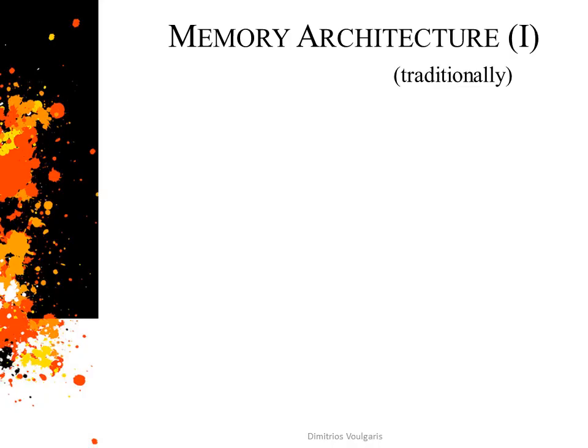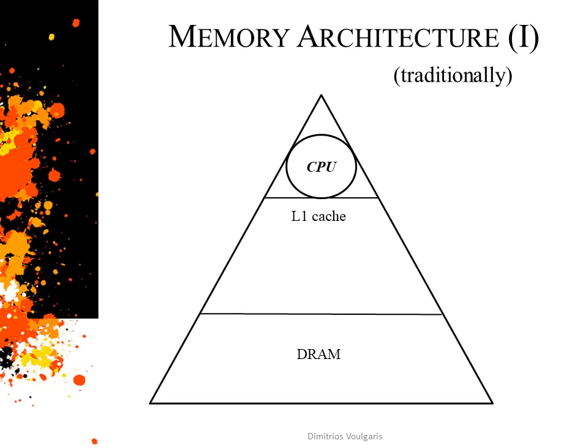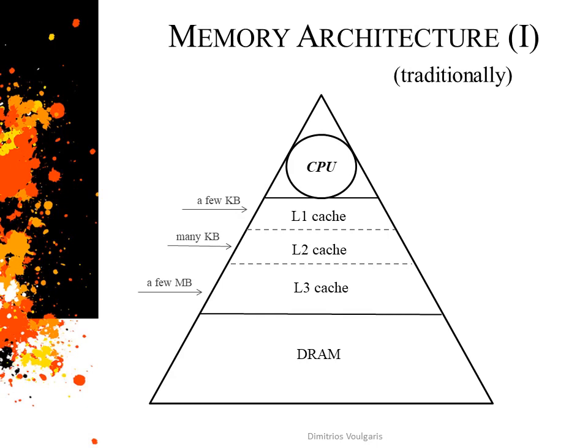Memory architecture describes the methods used to implement computer data storage in the best possible manner. Traditionally, from a high point of view, a memory system is nothing more than a cache and a RAM memory. Caches are very specialized and complicated pieces of hardware placed in a hierarchical way very close to the processing unit. They are always divided in layers, and depending on the layer, every cache presents different characteristics regarding size and data latency retrieval. Cache size can vary from a few kilobytes to a few megabytes, depending on the layer.